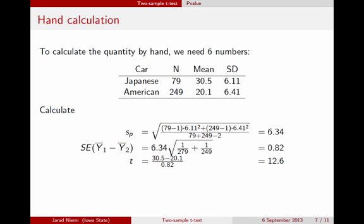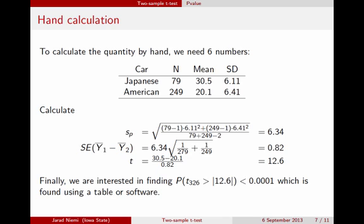The p-value is the probability of seeing the absolute value of the test statistic as or more extreme than what we observed on both sides. You would typically look this up in a table or using statistical software, but it is very small.